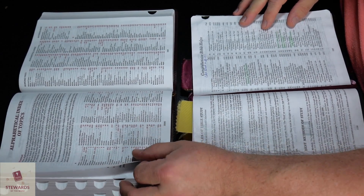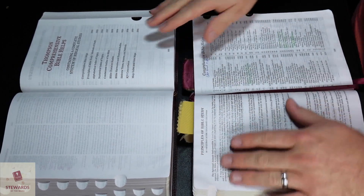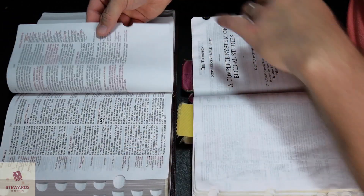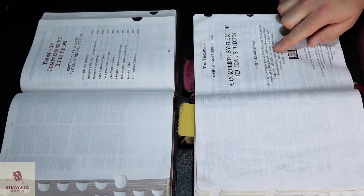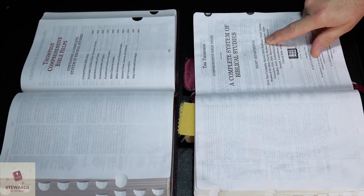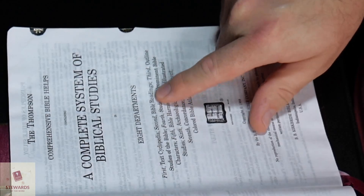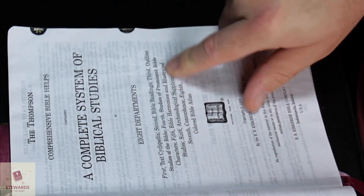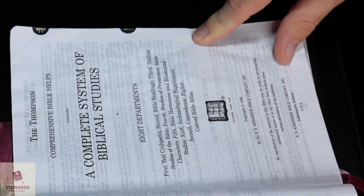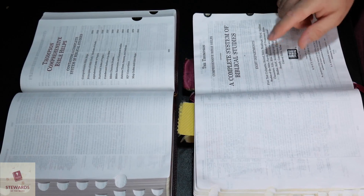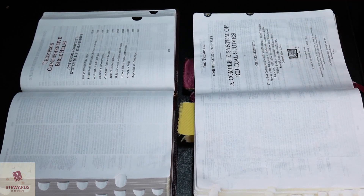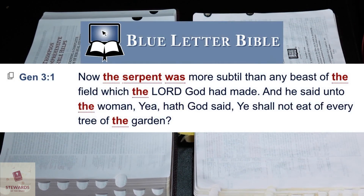Continuing on, I want to show you in the comprehensive Bible helps the Helps tab. There is no cover page in the new edition - it just goes straight from Revelation into this. There's no cover page, and here's one of the reasons: first you've got the numerical index, second is Bible readings - that's not in here. Special Bible readings, outline studies of the Bible, studies of prominent characters, Bible harmony, illustrated studies, archaeological supplement - not in here because they don't have one. And God is definitely not subtle. Who do we know in the Bible that's subtle? Well, the serpent was the most subtle of all the other animals.